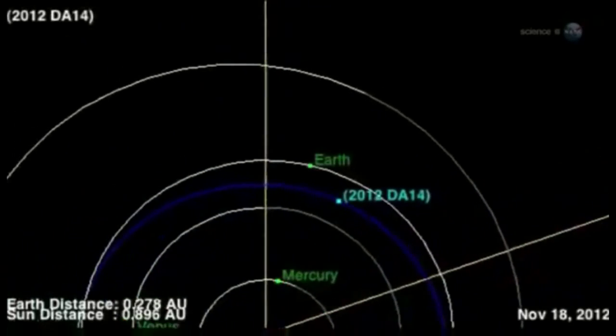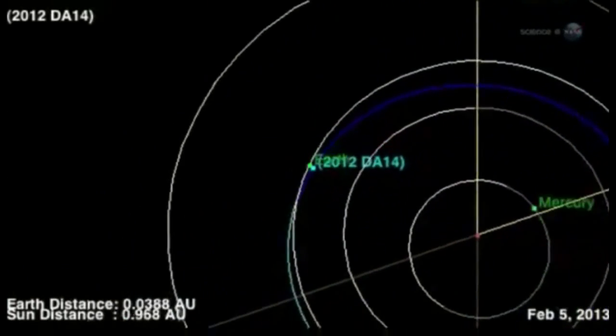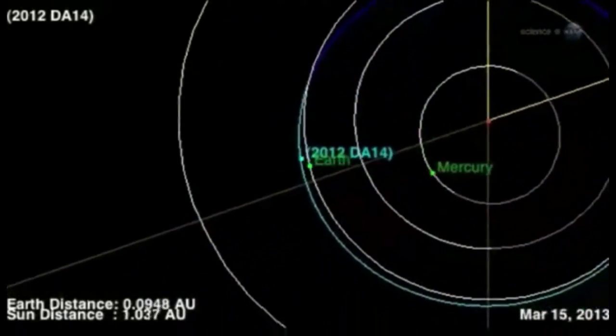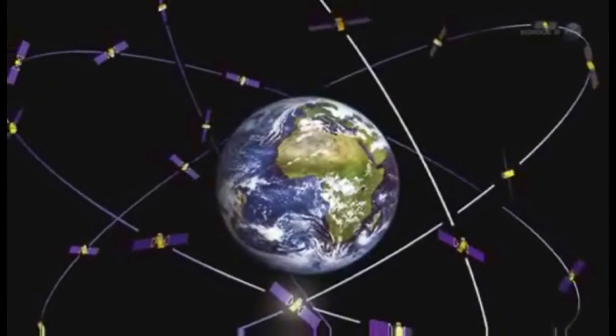2012 DA14 will definitely not hit Earth, emphasizes Yeomans. The orbit of the asteroid is known well enough to rule out an impact. Even so, it will come interestingly close.